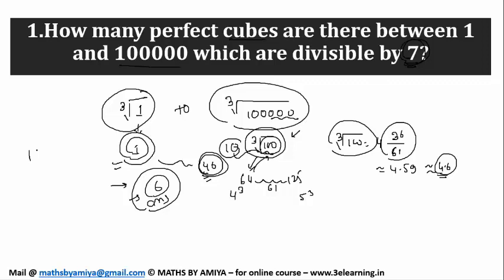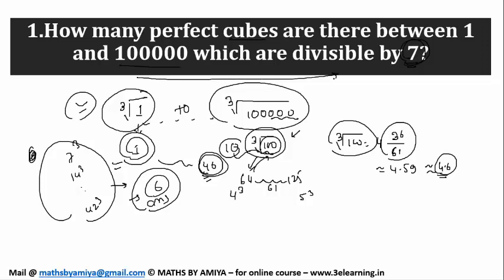Which are divisible by 7. Means you can say 7 cube, 14 cube up to 42 cube will be there in this range. So our answer will be 6. I am using nothing but the interpolation which we have seen before.